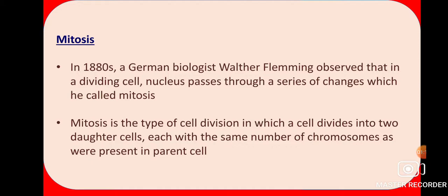For example, if we take human DNA, it contains 46 chromosomes. In mitosis, even though one cell divides into two, the same number of chromosomes is present in the daughter cells. So if 46 chromosomes are in the parent cell, then both daughter cells will also have 46 chromosomes each.